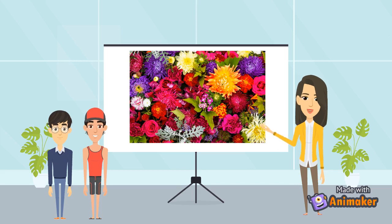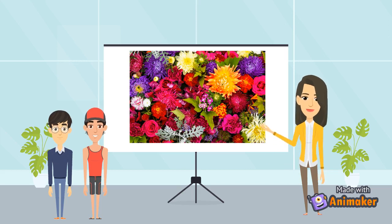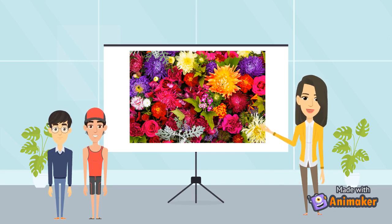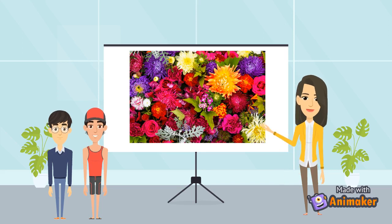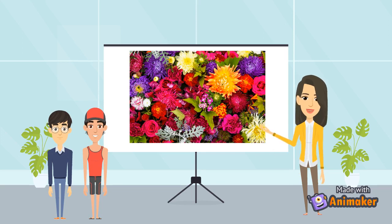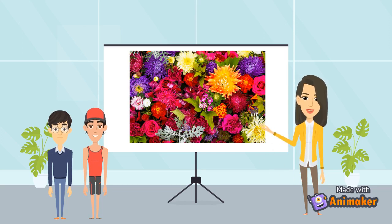Look at these flowers kids. They are so colorful because they have a pigment. What is a pigment auntie? Pigments are the things that give color to every living thing on this planet. In plants, you can see these pigments in leaves, and in flowers you can see them in their petals. Not just in plants and flowers, pigments are present in animals as well.